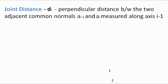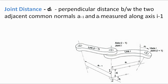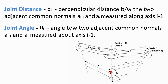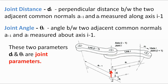For link i, the common normal aᵢ intersects axis i−1 at point 1. For link i−1, the common normal aᵢ₋₁ intersects axis i−1 at point 2. The distance between point 1 and point 2 is known as the joint distance dᵢ. The angle between the two common normals of the two links, measured about axis i−1, is the joint angle θᵢ — the rotation about axis i−1 needed to make the normals parallel. These two parameters dᵢ and θᵢ are joint parameters.